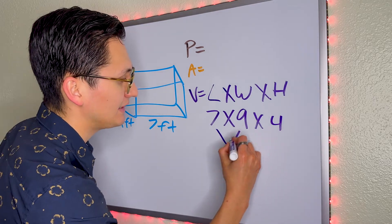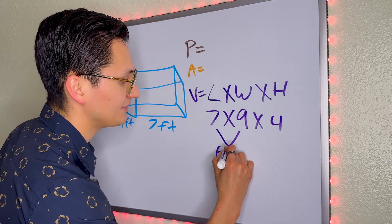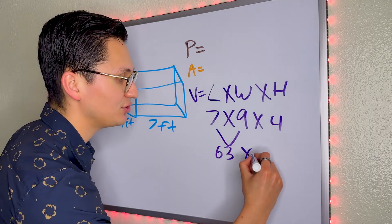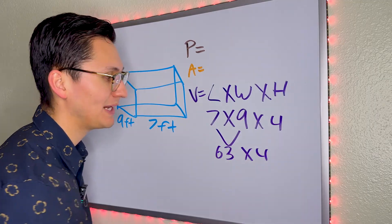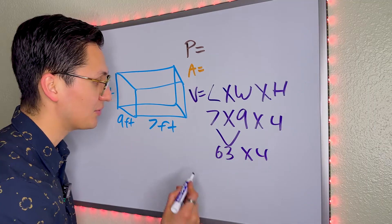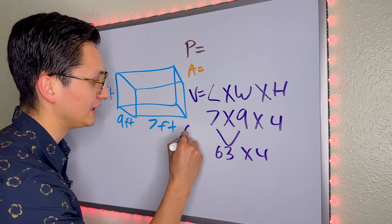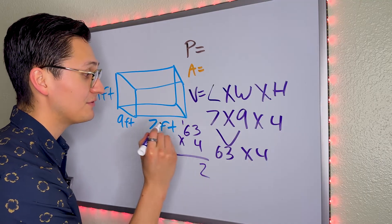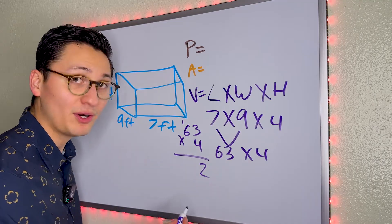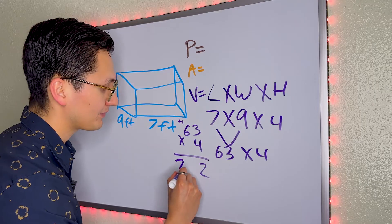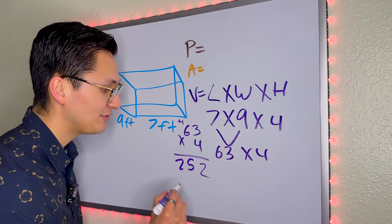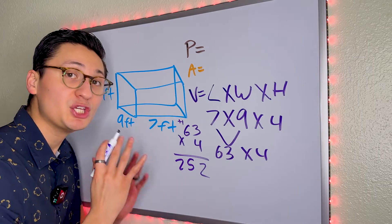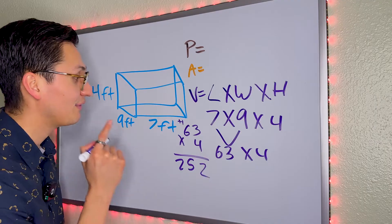7 times 9 is 63, and all we have left to do is multiply 63 times 4. 4 times 3 is 12, 4 times 6 is 24, plus 1 is 25. The answer is 252 cubic feet.